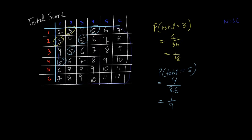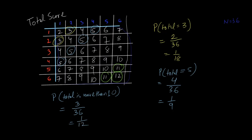The questions can be a little different — for example, find the probability that the total is more than 10. Looking at the table, which numbers are more than 10? Following the diagonals we can see 11, 11, and 12 — so there are 3 numbers greater than 10. The probability is 3/36 = 1/12.